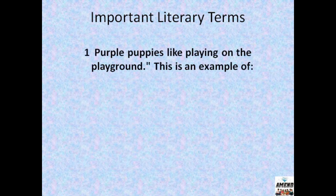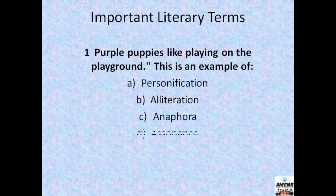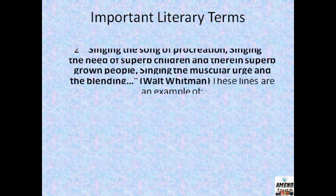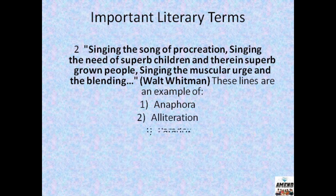To judge your knowledge, here are two questions. First: 'Purple puppies like playing on the playground' — this is an example of which of the following: personification, alliteration, anaphora, or assonance? Second question from Walt Whitman: 'Singing the song of procreation, singing the need of superb children and their superb grown people, singing the muscular urge and the blending' — these lines are an example of which of the following: anaphora, alliteration, paradox, or epistrophe? Please read carefully and answer both questions in the comments.